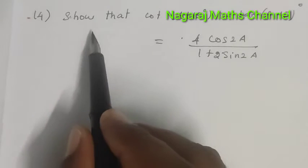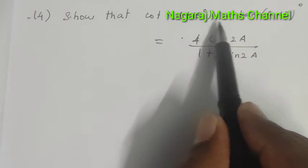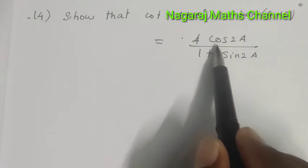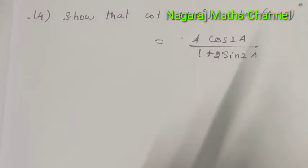Hi student, this is question number 14. Show that cot(A+15°) - tan(A-15°) is equal to 4cos(2A) divided by 1+2sin(A).